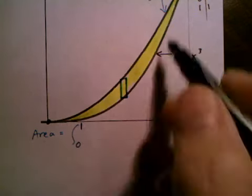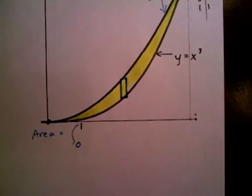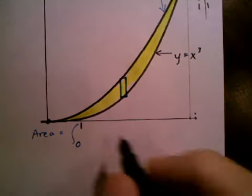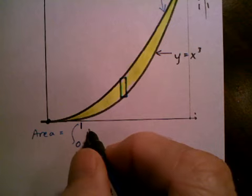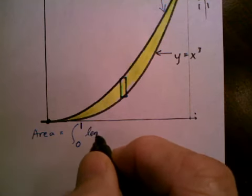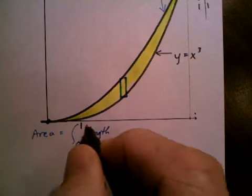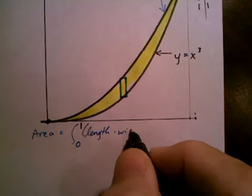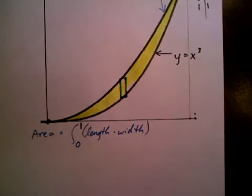all the way to the right endpoint, the right boundary of this region, which would be 1. And what are we adding up? Well, we're adding up the area of one rectangle. And the area of one rectangle would be the length of the rectangle multiplied by the width of the rectangle.